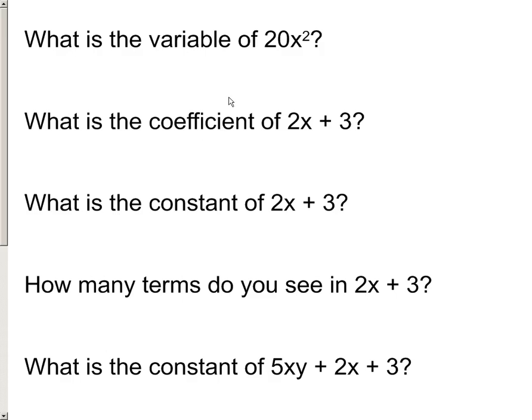When we look at this one, what is the variable of 20x²? It would be the x. What's the coefficient of 2x + 3? Well, a coefficient is the number that's multiplying the variable, or sitting right in front of the variable, so it would have to be the 2. I can't say it's 3, because for a coefficient, it's got to have that variable behind it, and there's no variable behind this 3. So what's the constant of 2x + 3? Well, it's a term - here's the first term and the second term. It's a term without a variable, so I'd say it's 3.